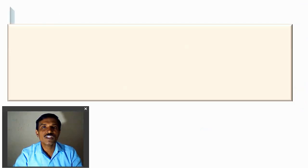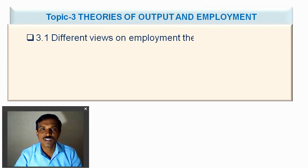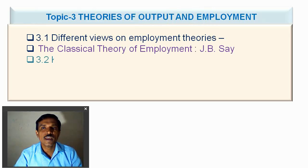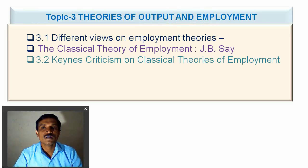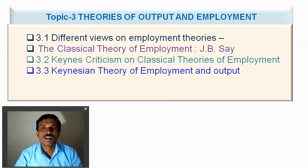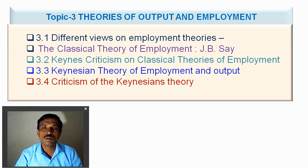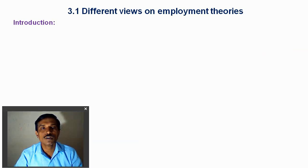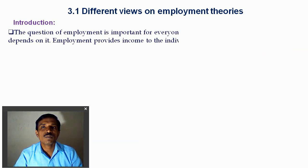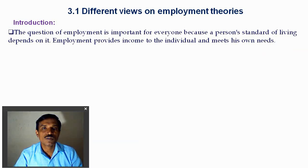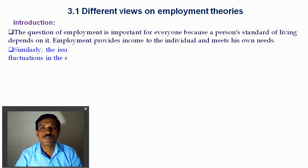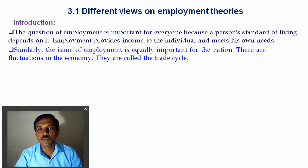So here we are looking at J.B. Say's Law of Market — topic number 3. We are looking at some views of employment: the classical theory of employment in detail, the J.B. Say's Theory of Employment, the critics of Keynes on the classical theory, the Keynesian theory of employment output, and the critics on the Keynesian theory by other economists. There are different views about employment in economics. Employment is important for every person and nation, that's why the study of employment is included in macroeconomics.